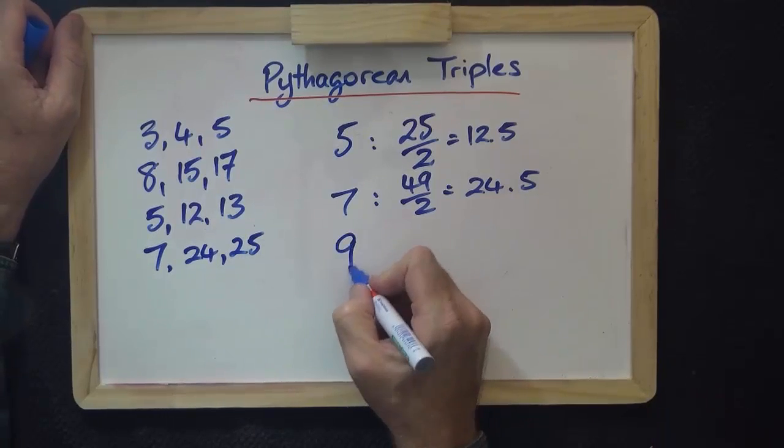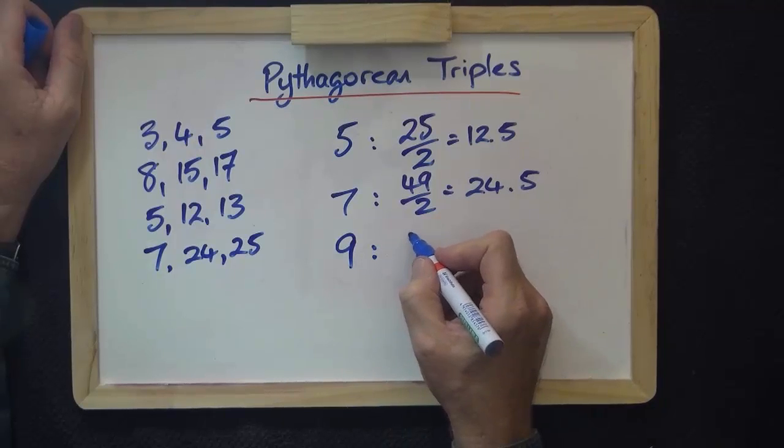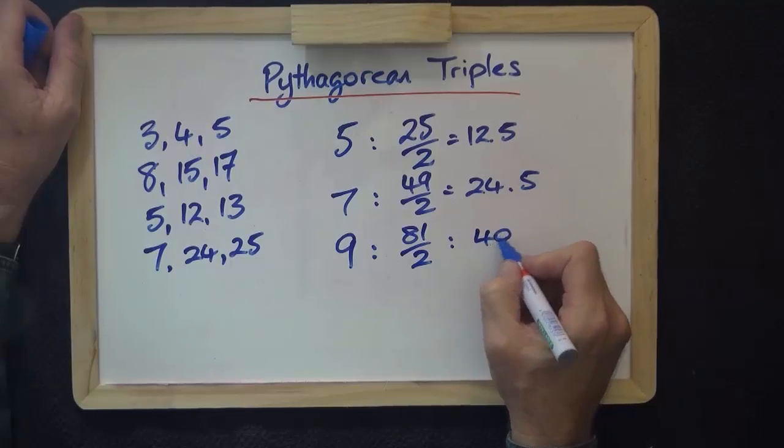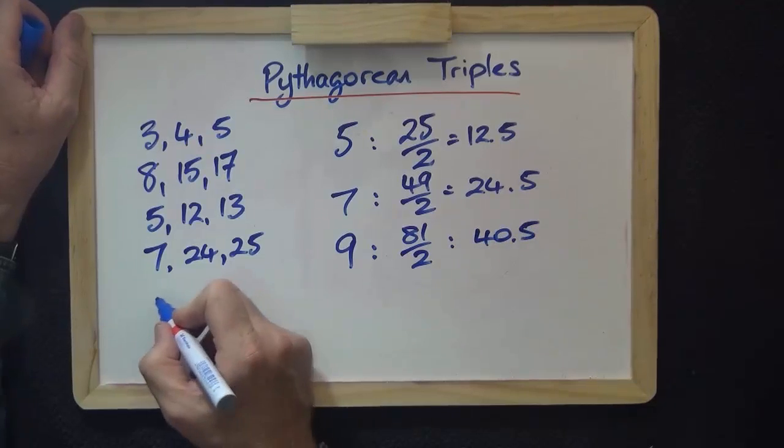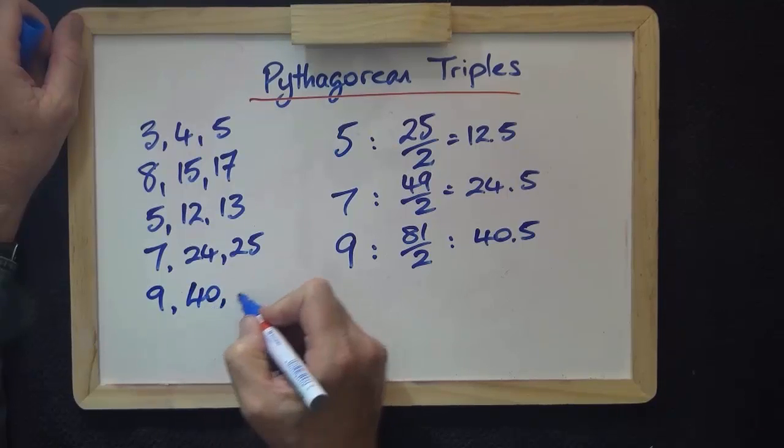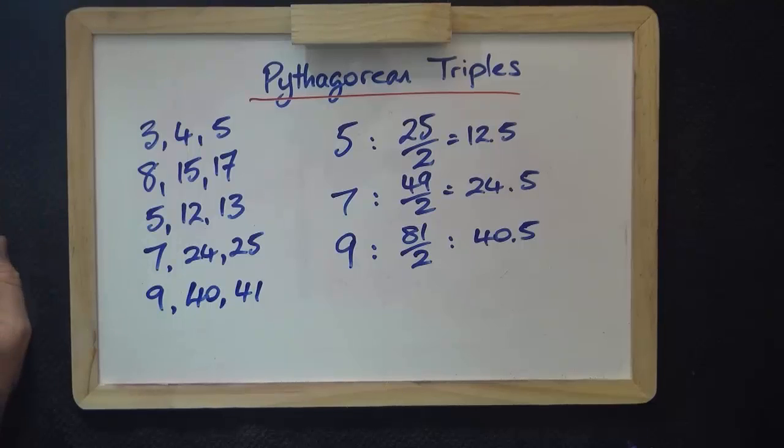I take the number 9. Squared, 81. Divide by 2 is 40.5. The Pythagorean triple is 9, 40, 41, and so on.